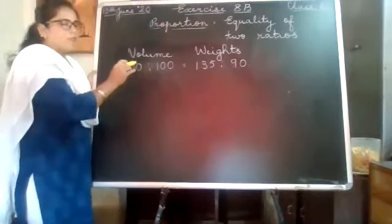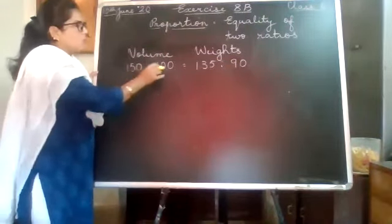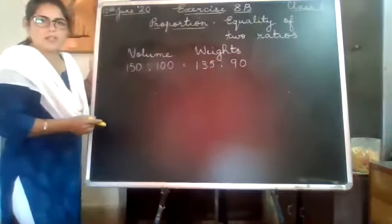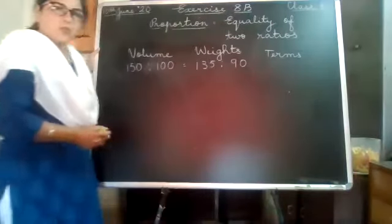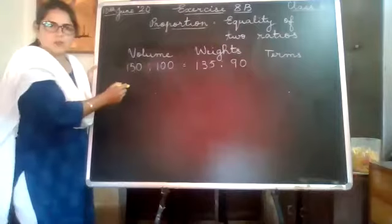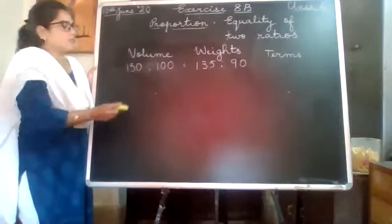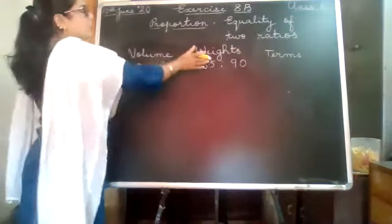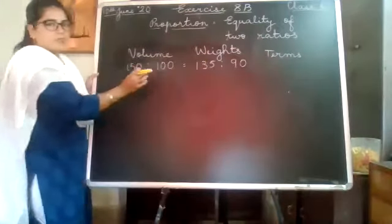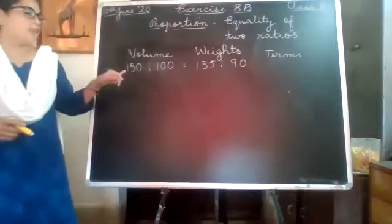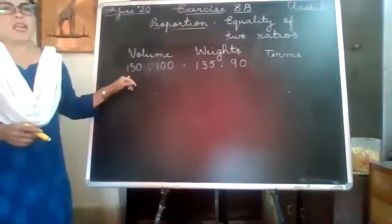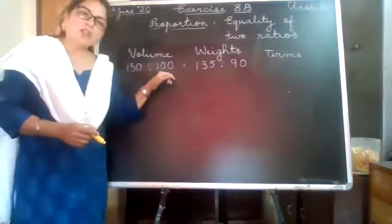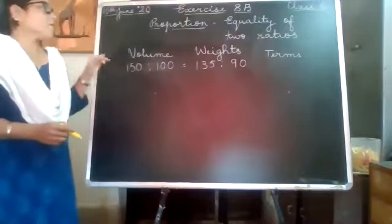First of all, forget about the proportion thing. All four numbers that we talk about in a proportion are called terms. Even in ratio, the two numbers we spoke about were called terms — but in ratio we had only two terms. If there were two terms, there was a certain name for each: this was called the antecedent and this is called the consequent.